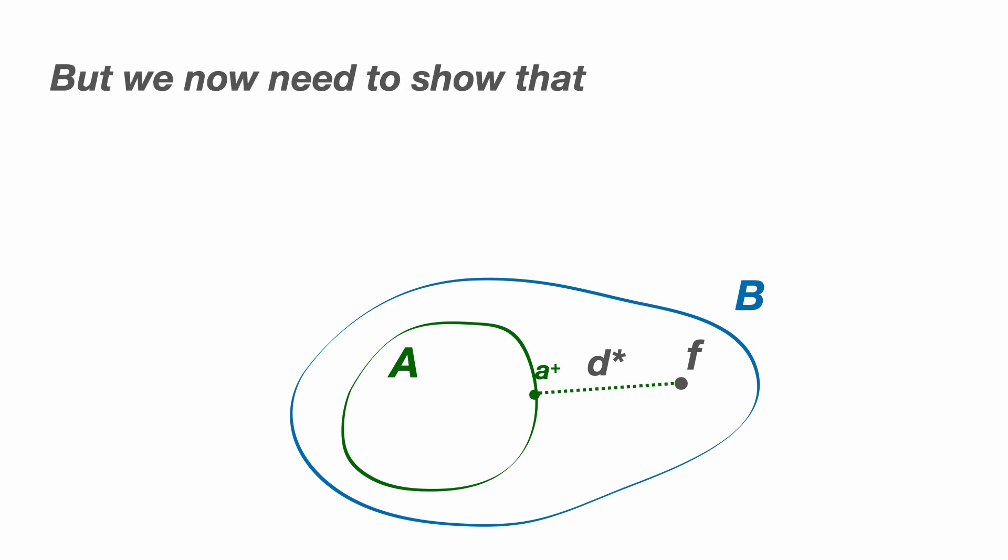To show that a plus is the best approximation, we need to show that no other element of capital A is any closer to f.